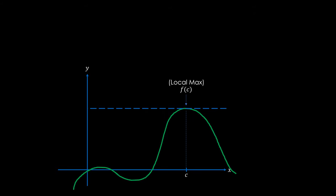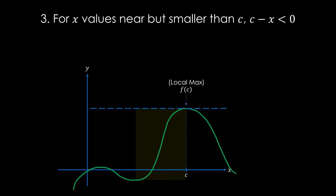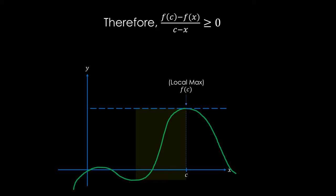Our third step is to note that for x values near but smaller than c, c minus x must be smaller than 0. Therefore, we can say that f of c minus f of x over c minus x is greater than or equal to 0.